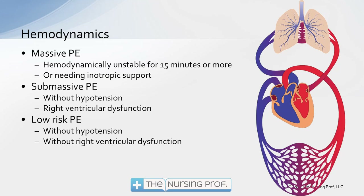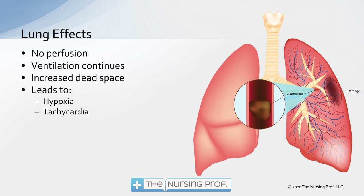With a clot in the lung, we have an area of lung that is not being perfused. Not only will gas exchange not occur, but we'll also have damage to the lung tissue itself. Ventilation continues — you listen to the lungs and hear normal lung sounds, because it's not a problem with ventilation, it's a problem with perfusion. There will be increased dead space, and this can lead to hypoxia and tachycardia. In low risk PEs where hypotension is absent, tachycardia may be our only sign. That tachycardia is caused by the back pressure on the right side of the heart.